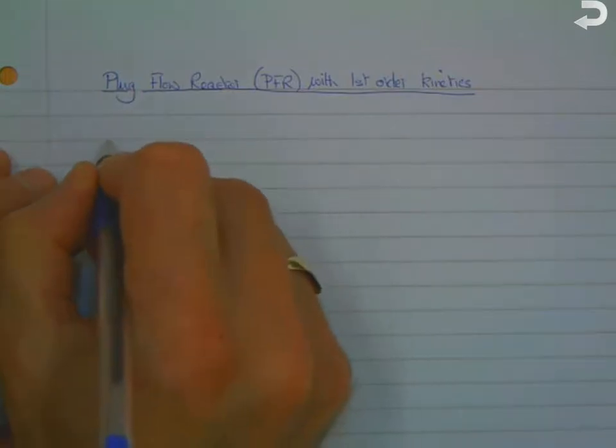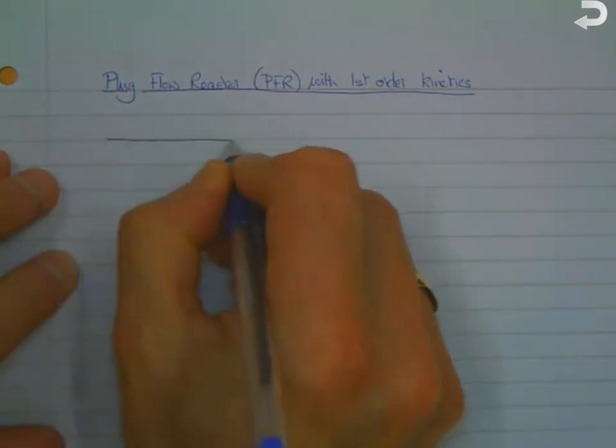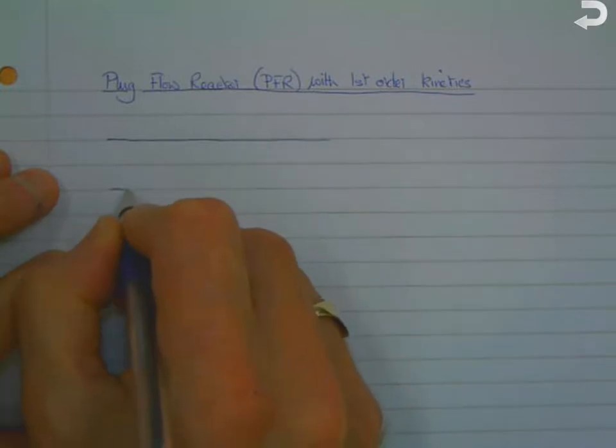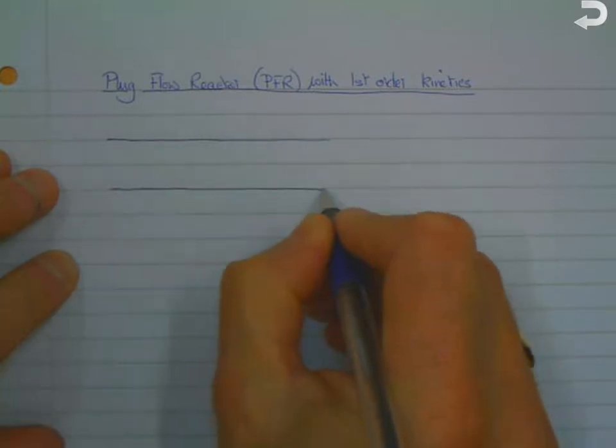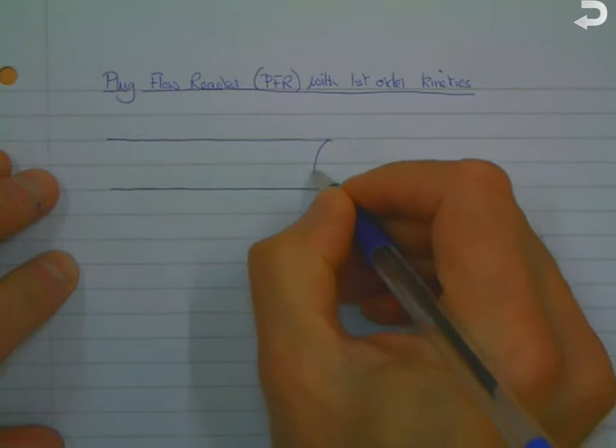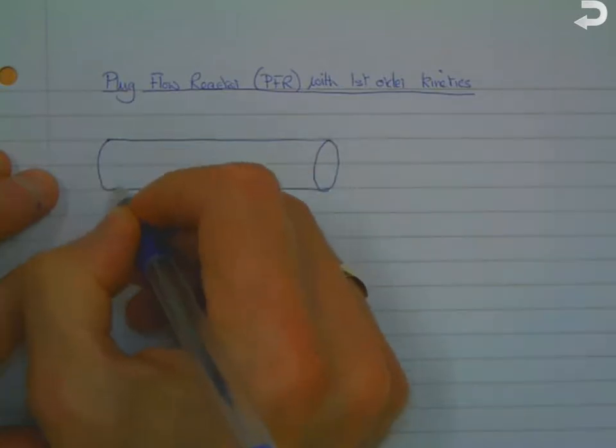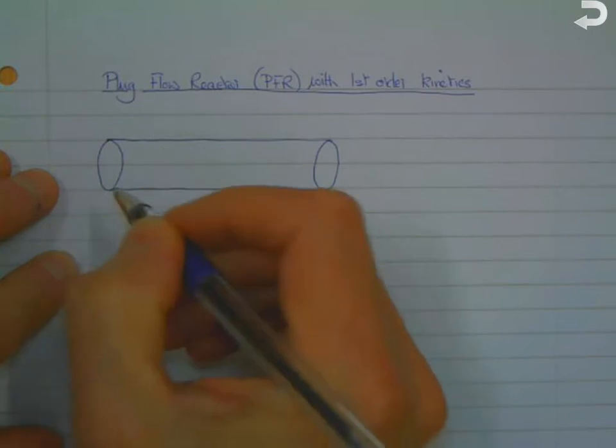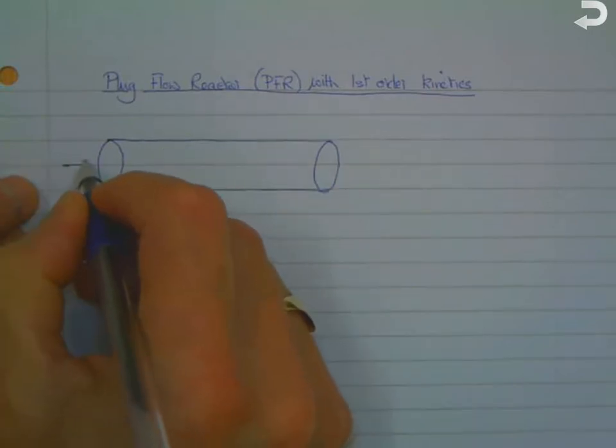So let's consider a plug flow reactor and impose some first-order kinetics on the expressions that were derived earlier. A plug flow reactor is simply a specific case of a tubular flow reactor.